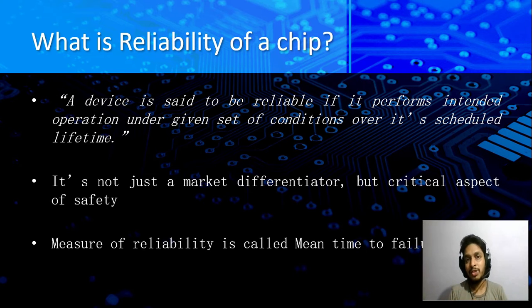But this cannot be used for all applications. For example, satellite communication and many other applications like space programs need a longer duration. There are satellites which work for more than 10 or 20 years. Critical applications, for example medical applications and automotive industry, reliability becomes very important. It's not just a market differentiator, it's the critical aspect of safety.